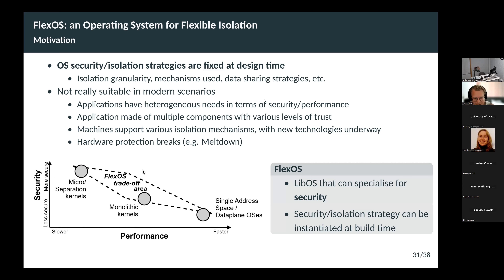FlexOS's idea is that it's a single operating system that gives you access not just to a point in that design space, but to an area. It's a library operating system that can specialize for security. At build time, you can say you want something more like a monolithic kernel, or you want to drop all protection and get unikernel-style performance.